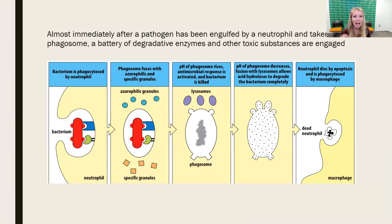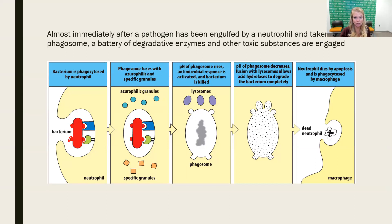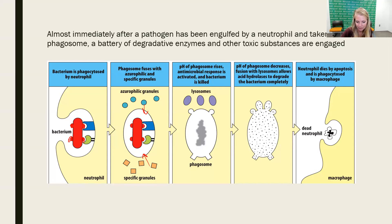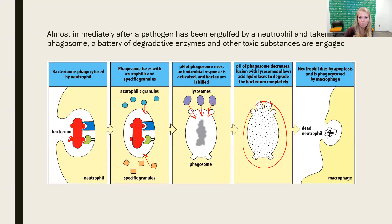Bacteria that have C3B on the surface are recognized by the neutrophil and internalized through receptor-mediated endocytosis, just like with the macrophage. Then the granules are added into the phagosome — a variety of granules important in bacterial degradation. Lysosomes containing superoxides will further degrade and kill the bacteria until you have a large vesicle full of nutrients that can be recycled.